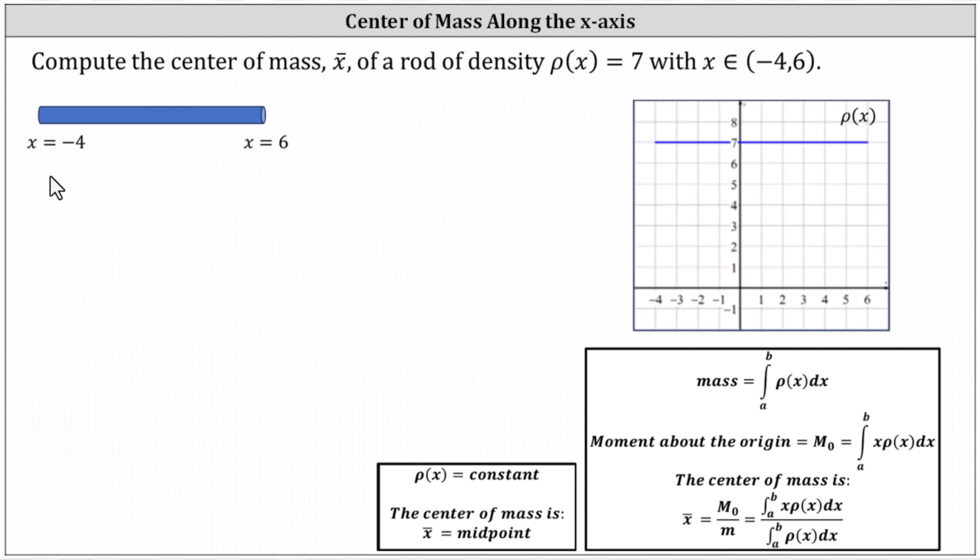We can think of the center of mass as the balance point of the rod where you could place your finger along the x-axis and the rod would balance horizontally. For example, we can think of this location as the center of mass, the point where the rod would balance horizontally.